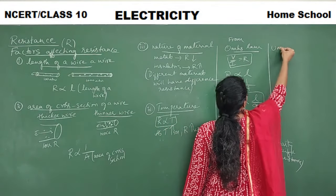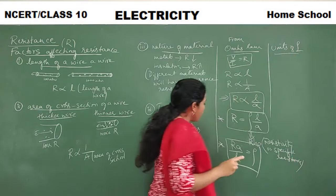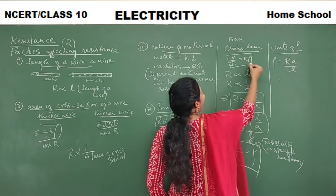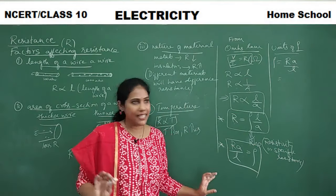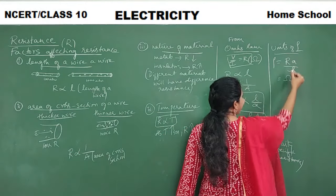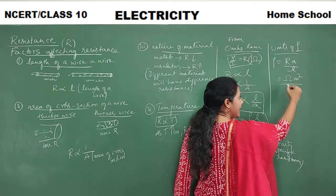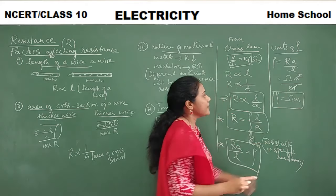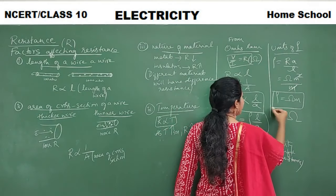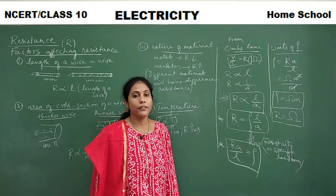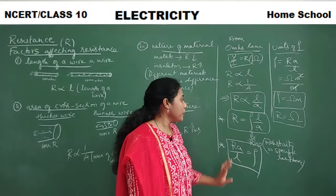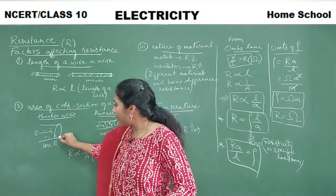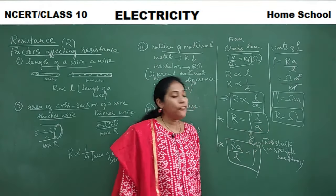Let us find the units of ρ. Since ρ = RA/L, the unit of R is ohms, area is meter², and length is meter. So the unit of ρ = ohms × meter² / meter = ohm·meter. The unit of R is just ohms, while the unit of ρ is ohm·meter. Here L is the length of the wire and A is the area of cross section — the circular area inside the wire.